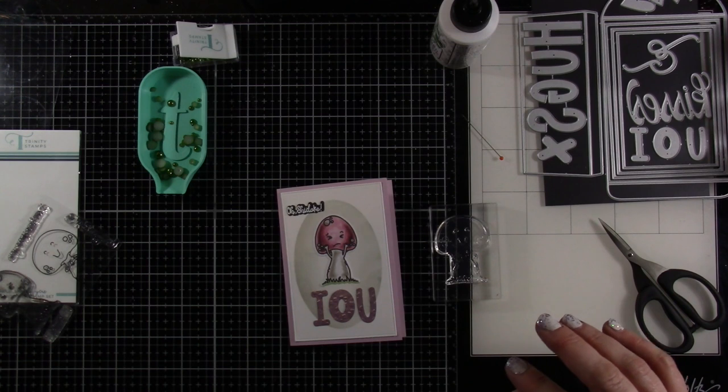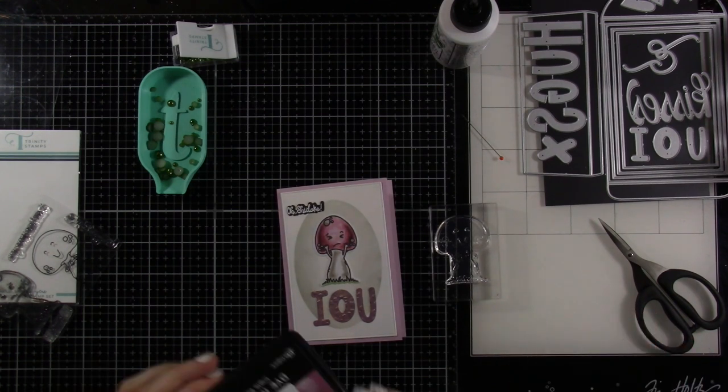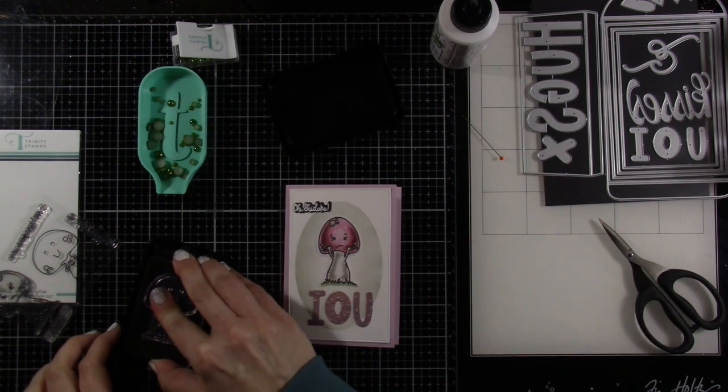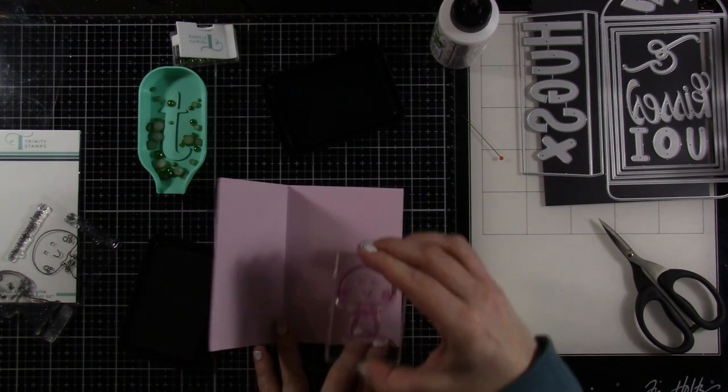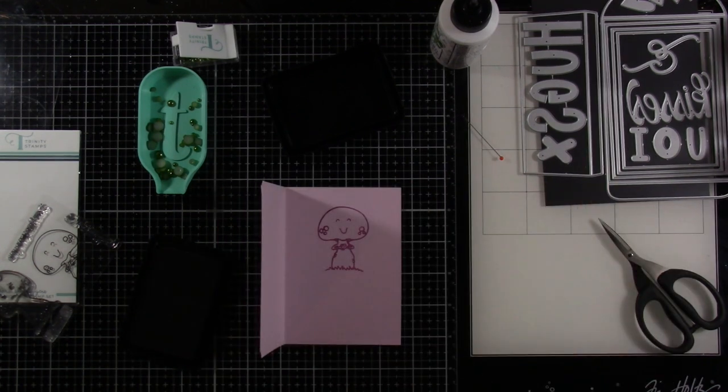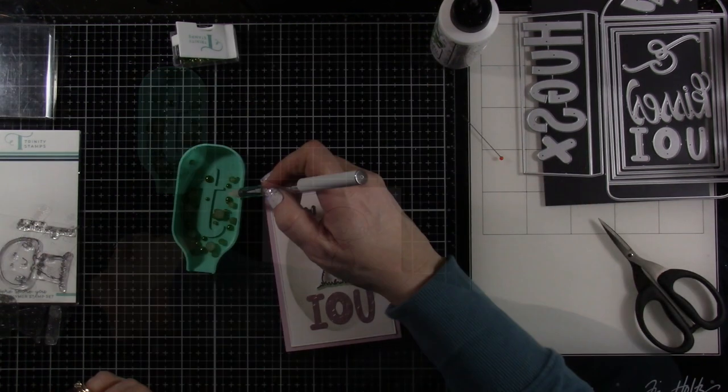And then I do decide I need to stamp a little guy on the inside. So I'm going to grab the happy one and he's going to get inked up with some triple berry ink. It's like a purpley ink. It works perfectly on the inside there.